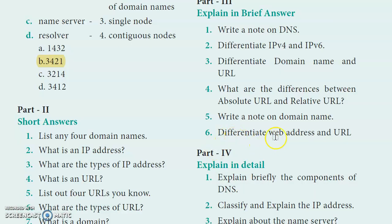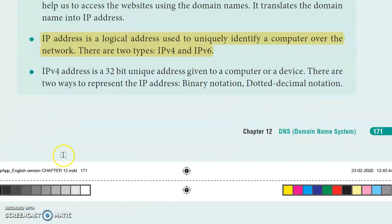Next question: Differentiate web address and URL. Web address is essentially the IP address. It is a logical address used to uniquely identify a computer over the network. There are two types: IPv4 and IPv6.